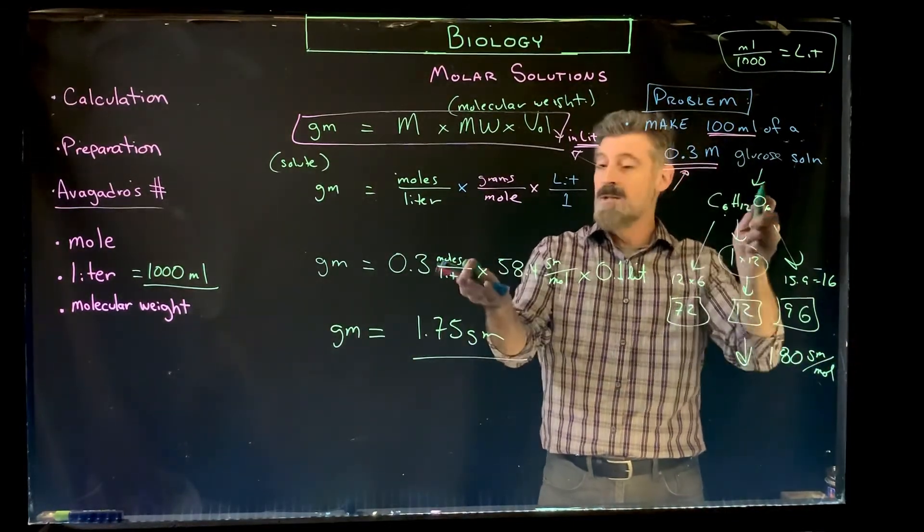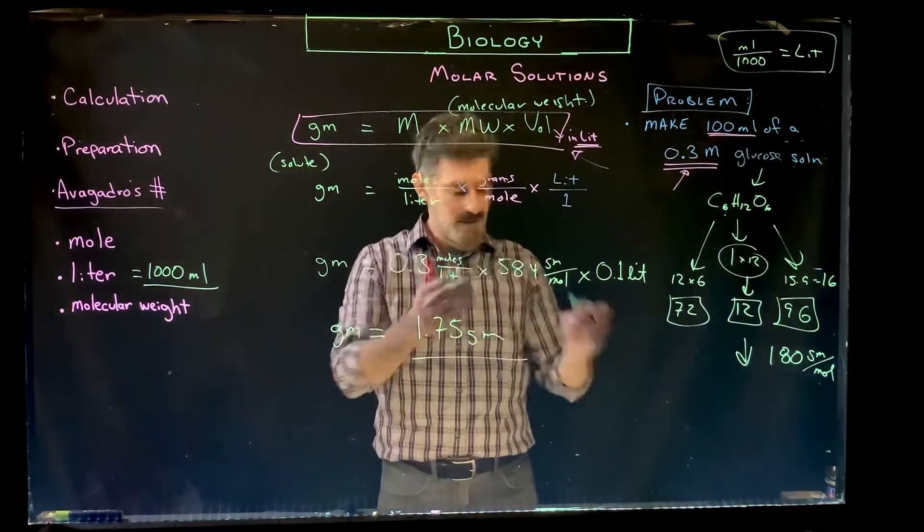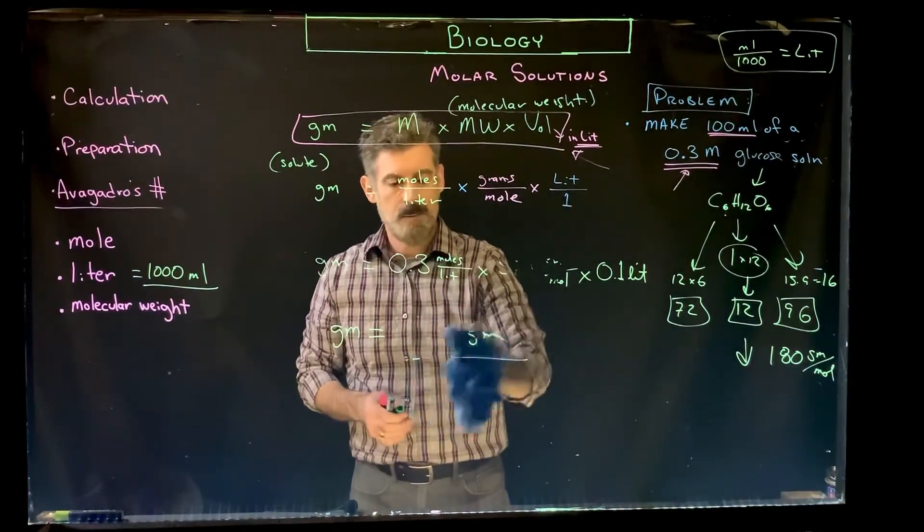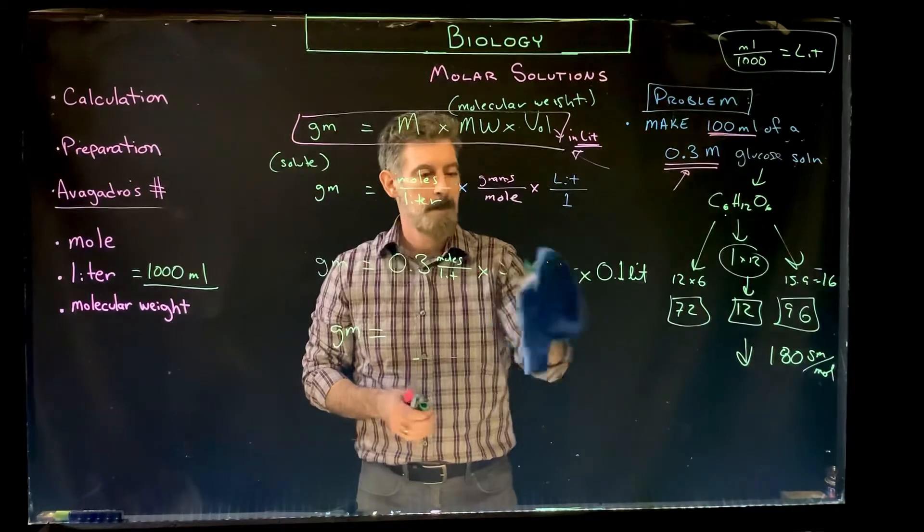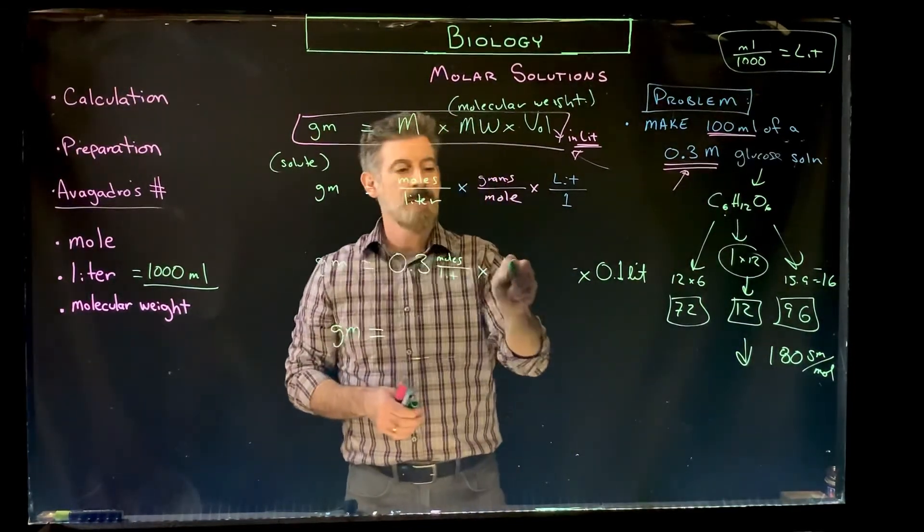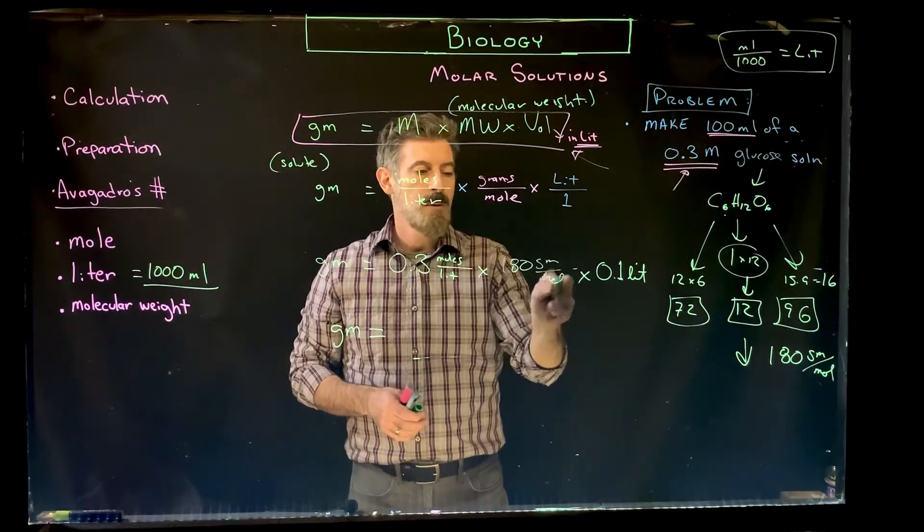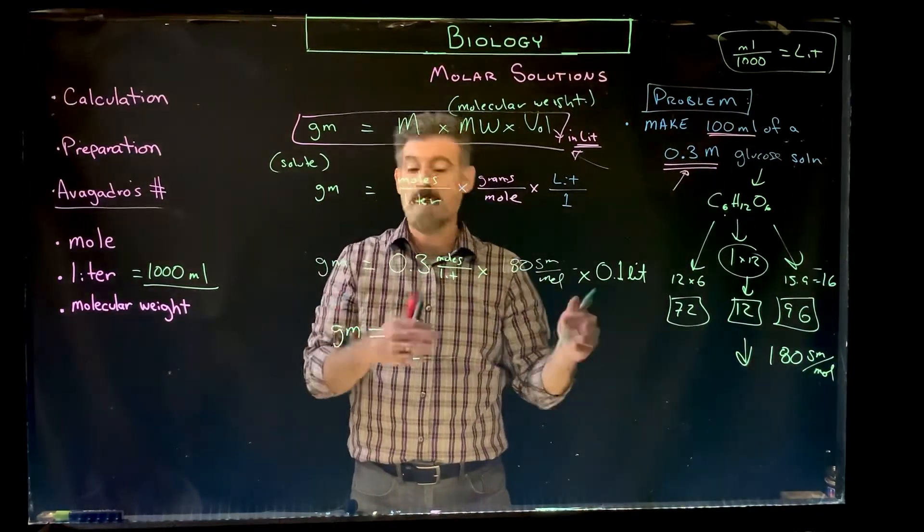So if we add those up, we get the molecular weight for glucose is going to be about 180 grams per mole. And in that particular case, if we changed it, we would just substitute this number. We would take that number out. Obviously we're going to get a new number here. And we plug in the 180 grams per mole here. And then we just resolve it again.